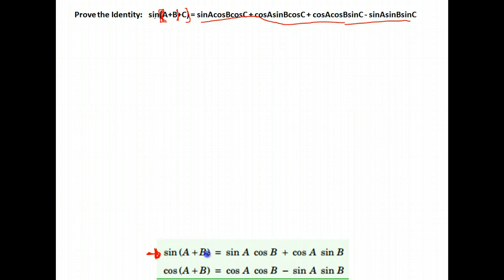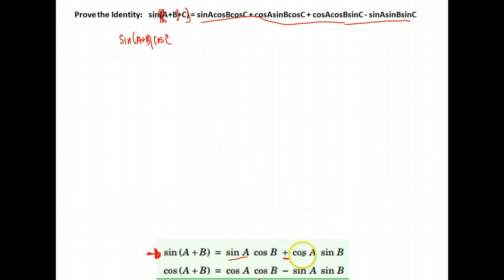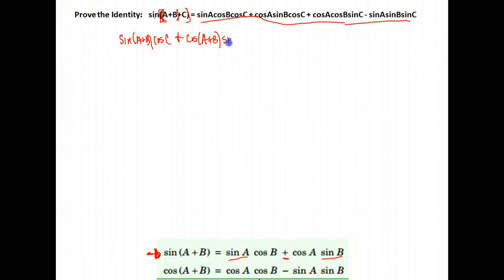The identity says the sine of two angles added together is the sine of the first angle. My first angle was A plus B. So we'd have the sine of A plus B times the cosine of the second angle. My second angle was C, so times cosine of C. Then plus the cosine of the first angle — cosine of A plus B — times the sine of the second angle, so times sine C.